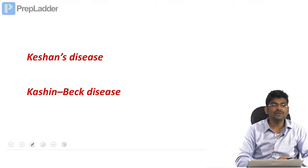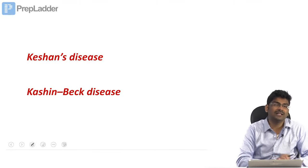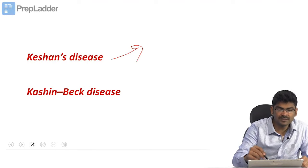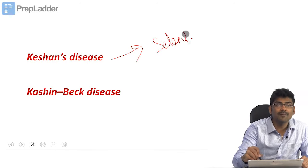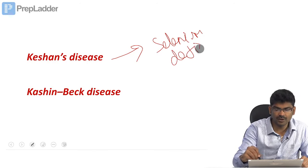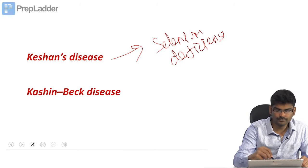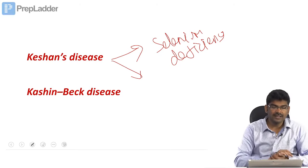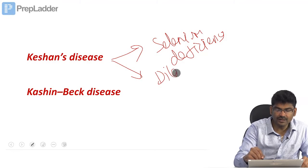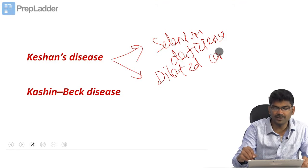Finally, we should know about Keshan's disease. Keshan's disease is due to selenium deficiency, and it is dilated cardiomyopathy.